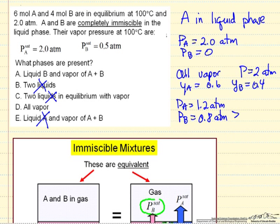But this is greater than the saturation pressure that we're given. Saturation pressure is only 0.5 atmospheres. So that's not possible. Therefore, we can't have all vapor.